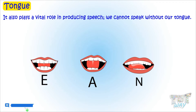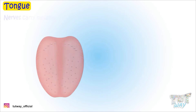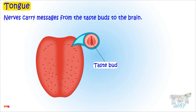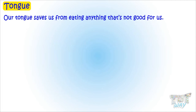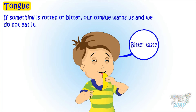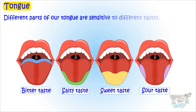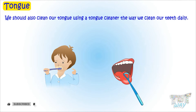We cannot speak without our tongue. Our tongue is richly supplied with nerves and blood vessels. Nerves carry the messages from the taste buds to the brain. Our tongue saves us from eating anything that's not good for us, like if something is rotten or bitter — our tongue warns us and we do not eat it. Different parts of our tongue are more sensitive to different tastes. Just as we brush our teeth regularly, we should also clean our tongue using a tongue cleaner in the morning when we brush our teeth.